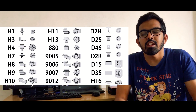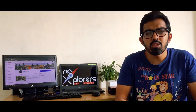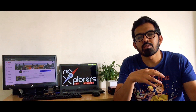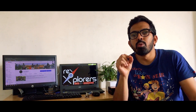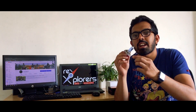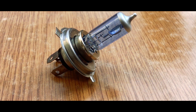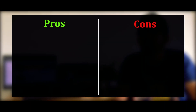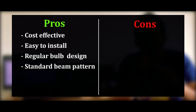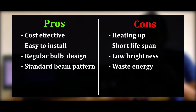These socket numbers are an industry standard for the fitting as well as the rear socket of the headlamp. There is also a limitation with halogen headlamps — you do not find much variety of color temperatures, although you might find a few with a blue reflective filter on the glass. For example, the halogen H4 headlamp I have here has a slightly blue tint but that won't change the color temperature much. As for pros and cons: halogens are very cost effective, easy to install, have a regular bulb design and a standard beam pattern. On the other hand, they heat up easily, have a shorter lifespan, low brightness and waste a lot of energy as heat.